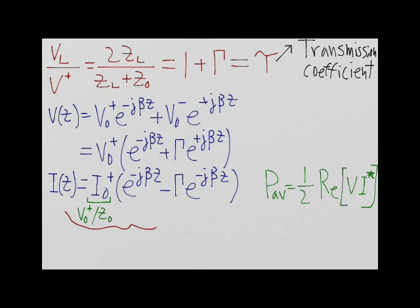Using this expression, we can find the forward power P+. This is equal to one-half multiplied by the magnitude of V0+ squared divided by Z0.